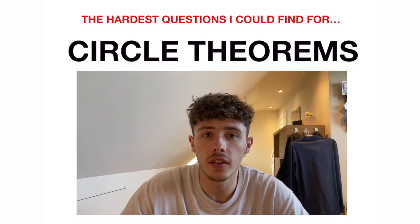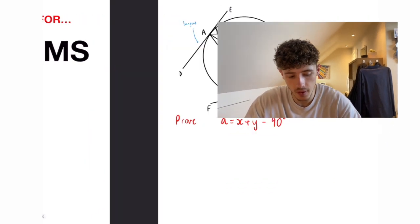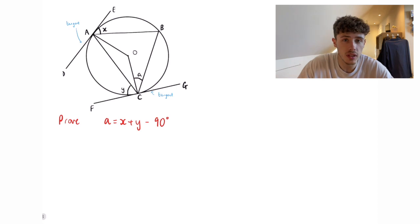The hardest question I could find for circle theorems. Now this one looks pretty awful, as soon as you see a circle that has a load of letters instead of angles you know it's going to be a difficult one.